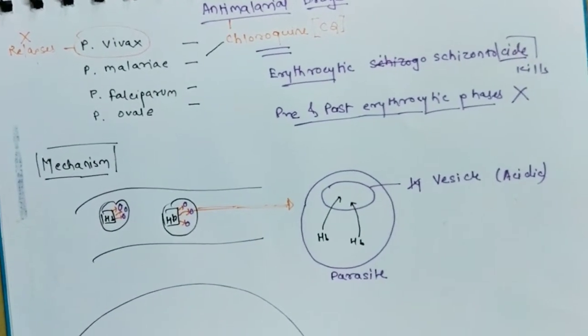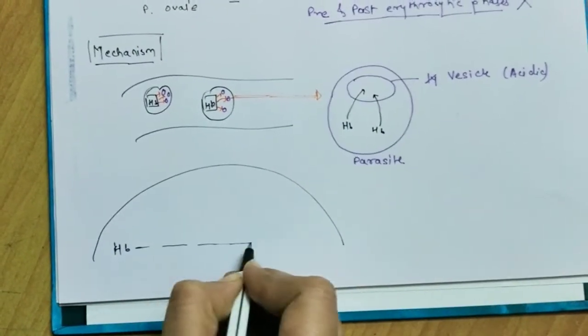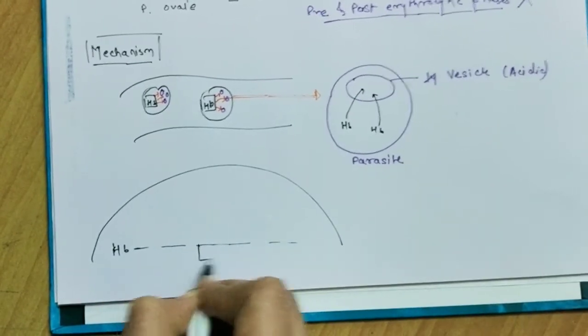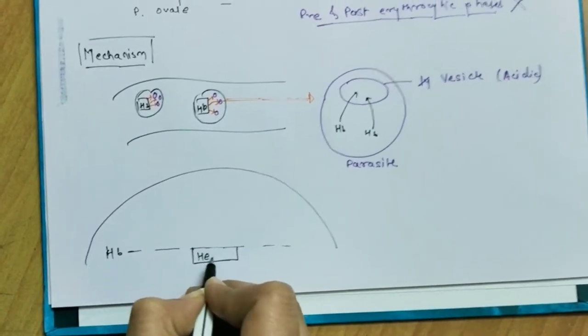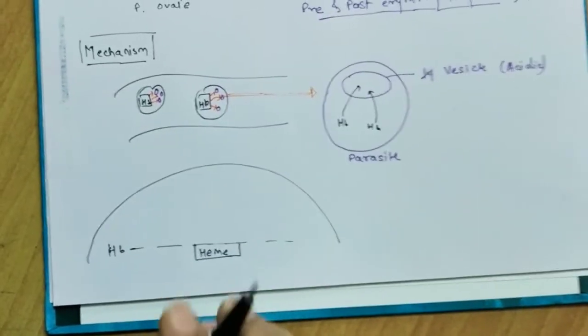Now this hemoglobin gets inside the vesicle. Now what it does inside the vesicle - actually let me draw the vesicle below here for you. Now hemoglobin after coming into the vesicle, it undergoes degradation. Now there are various stages of degradation of intermediate products.